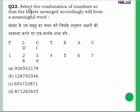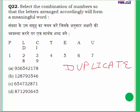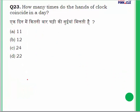Question 22: Select the combination of numbers so that the letters arranged accordingly form a meaningful word. From the given alphabets, the word formed is 'DUPLICATE'. The code for D is 8, for U is 7, for P is 1, and so on. The sequence 8, 7, 1... is present in option D. Answer is option D.